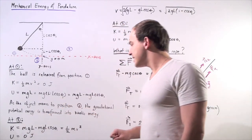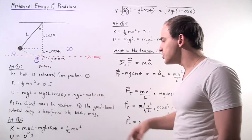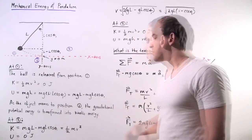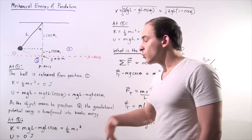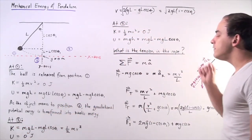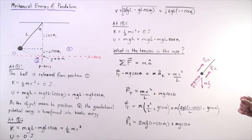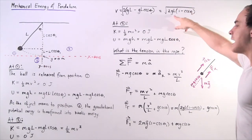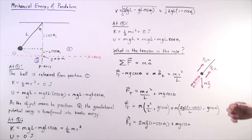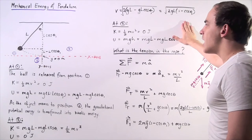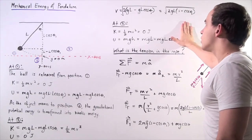The kinetic energy at position two equals the initial gravitational potential energy, which also equals one half mv squared. Solving for velocity, we find that v equals the square root of two times g times l multiplied by (one minus cosine theta one). This is the velocity of the object at position two, at the origin.